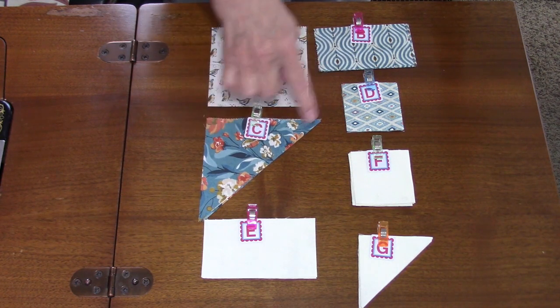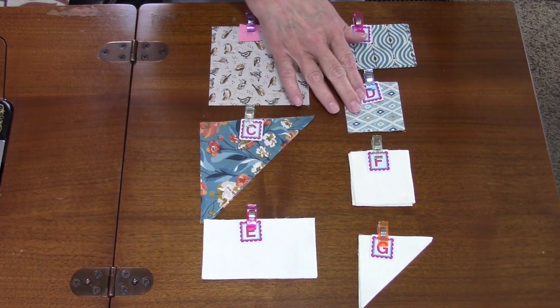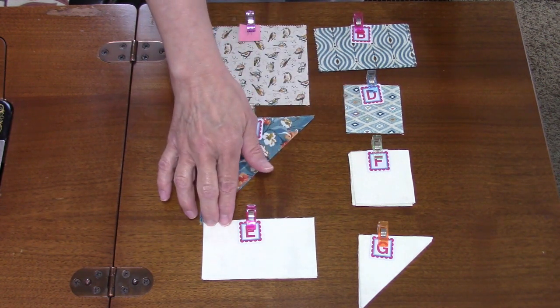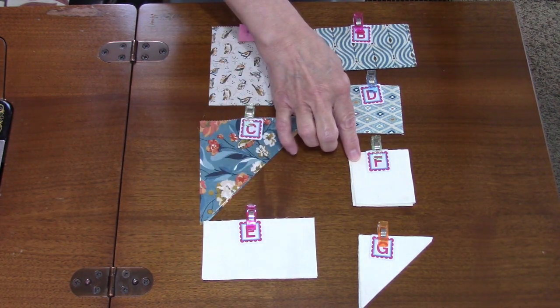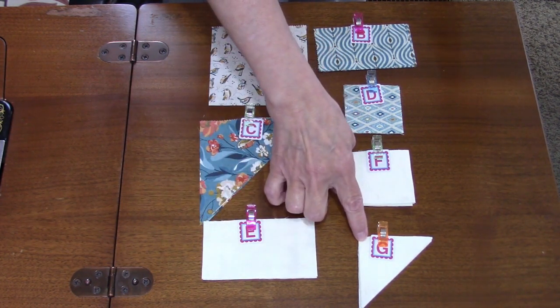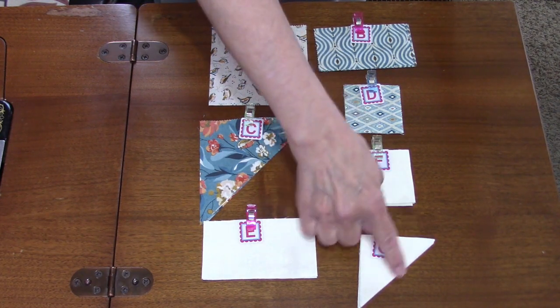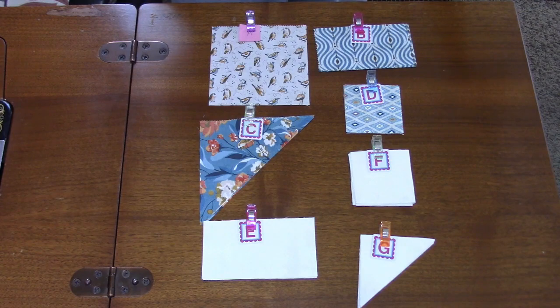Then you're going to cut them on the diagonal to give you four triangles. D is four two and a half inch squares. E is four two and a half by four and a half inch rectangles. F is eight two and a half inch squares, and G is four three inch squares and you're also going to cut those on the diagonal. I'll adjust the camera and we'll get started making the Aunt Dinah's Choice block.